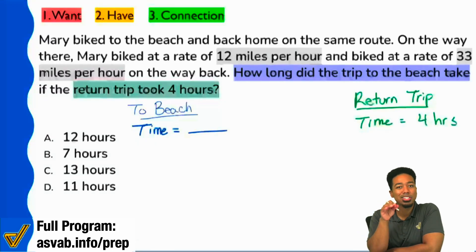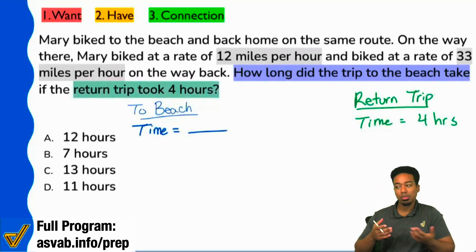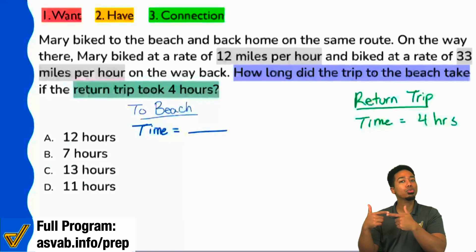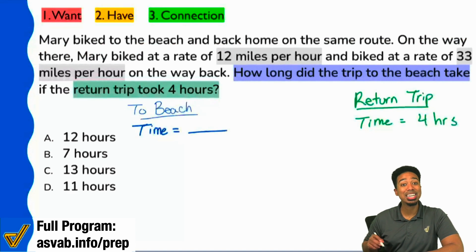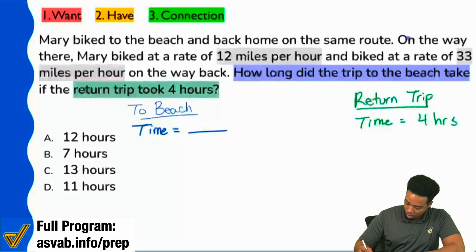So let's again just really categorize the data because the point of this is not to know the answer right away. Sometimes you just have to understand the information first. We're understanding, we're trying to figure out the time it took to get to the beach. We have the time it takes to get back. Great. Let's read through the other pieces of information. Here it says, Mary biked to the beach and back home on the same route. On the way there, Mary biked at a rate of 12 miles an hour. Again, it said on the way there. So again, on the way there, 12 miles an hour.